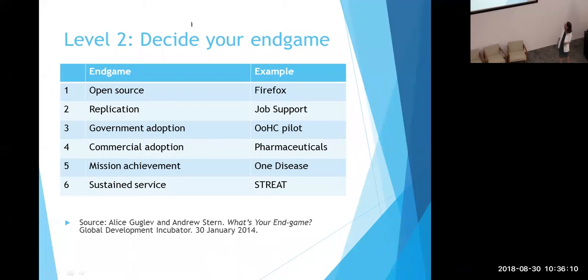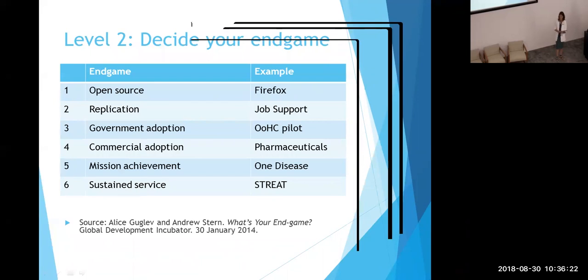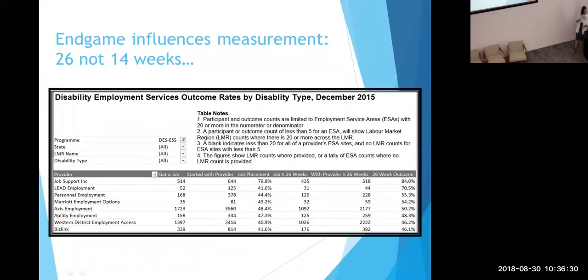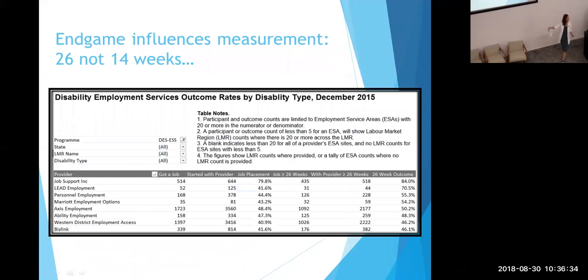Your endgame influences your measurement. If your endgame is government adoption, we have one disability support service, they budgeted 14 weeks showing employment outcomes at 14 weeks. The Commonwealth government is looking for 26-week outcomes, not 14-week outcomes. Government said show us six months. They had not budgeted for that extra time. Try to budget ahead. Knowing your endgame can help you plan.